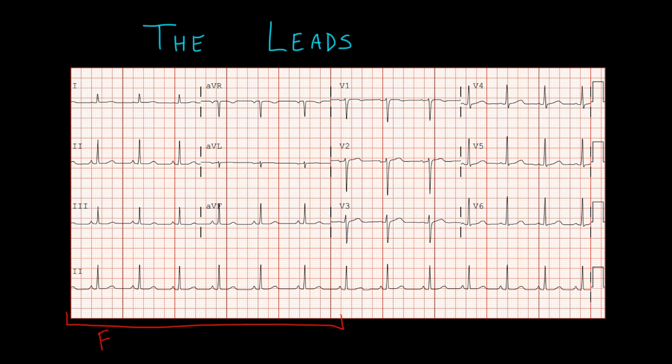Okay, now let's talk in a little more detail about the leads that make up our EKG tracing. You'll remember that here on the left side we have our frontal plane leads, which are also known as the limb leads, and here on the right side we have our precordial leads, which are also known as the chest leads.